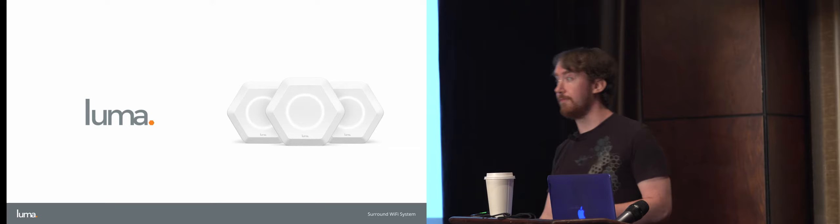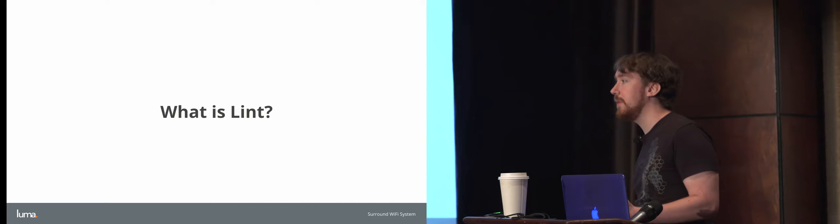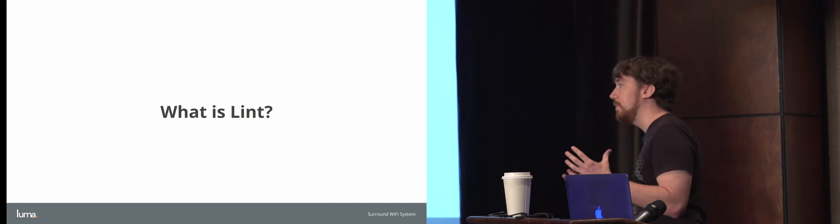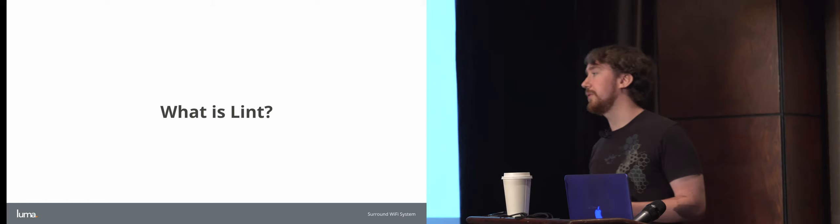I'd also like to give a shout out to Big Nerd Ranch — I wrote this talk while working for them. They're a wonderful company; they have great classes, books, and training, so check them out. The big question is: what is Lint? It's a static analysis tool built in the 1970s out of Bell Labs, and it's been ported to every major programming language. I like to think of Lint as my detail checker — it helps me keep track of small, fine-grained minutiae in my code base that might otherwise be lost. In Android, you have your view layer, your model layer, fragments and activities. Sometimes you can get lost with small details — that's what Lint excels at.